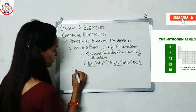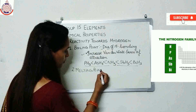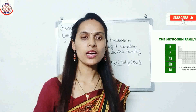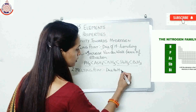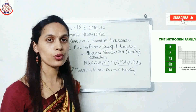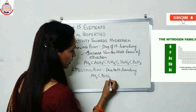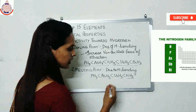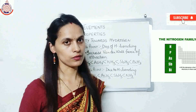Second property is melting point. Due to hydrogen bonding, the melting point of ammonia is greater than the other hydrides, so the order is: PH3 < AsH3 < SbH3 < NH3.